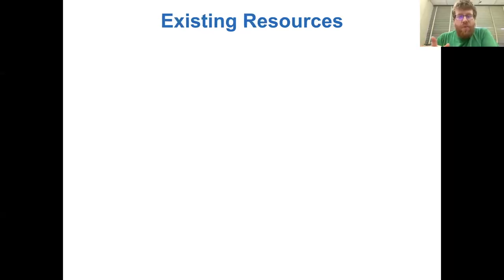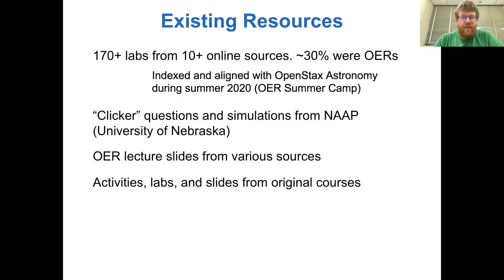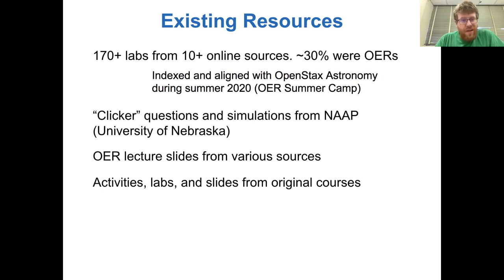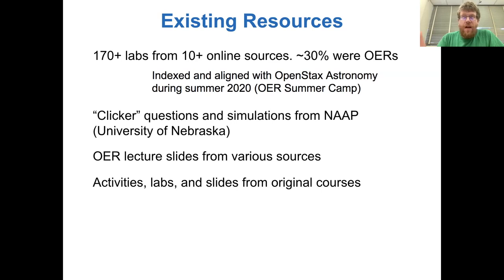When we started the project, one of the first things we did was take a look at what currently existing open resources for OpenStax astronomy existed. Through searching from some of our known resources, as well as some of the information posted previously on OER Commons, there are about 170 or more labs coming from 10 different resources, mostly universities all across the U.S. About 30% of those are OER, and the other 70% were copyrighted or had no specific source referenced. So we've gone through and indexed all of these and aligned them with where they appear in the textbook.